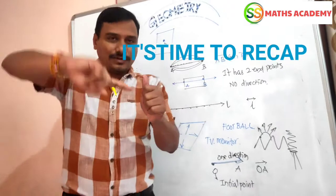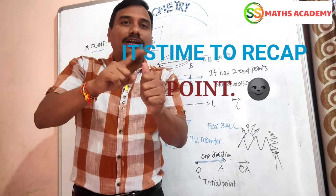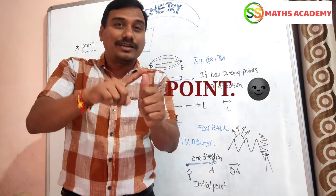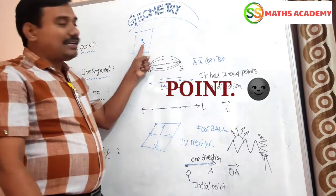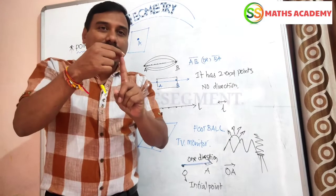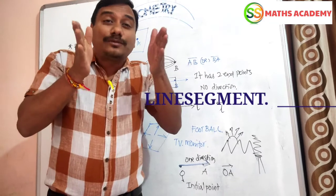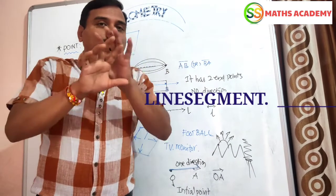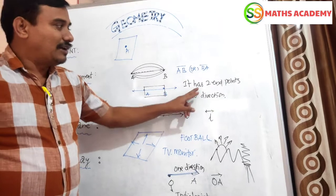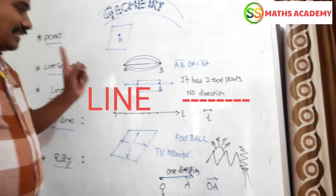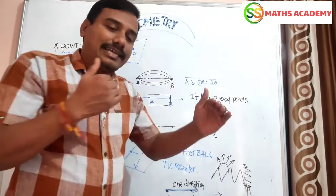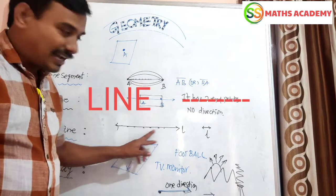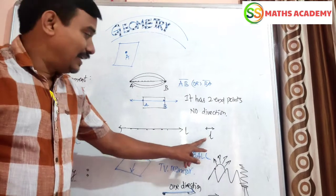Let us quickly recap this class. The first basic geometry concept is point — a geometrical concept that has no length, no breadth, no height. It is represented by capital letters. Line segment is a finite part of a line with two end points and no direction, written as AB. Line is a straight path of points that extends endlessly in both directions, for example line L.